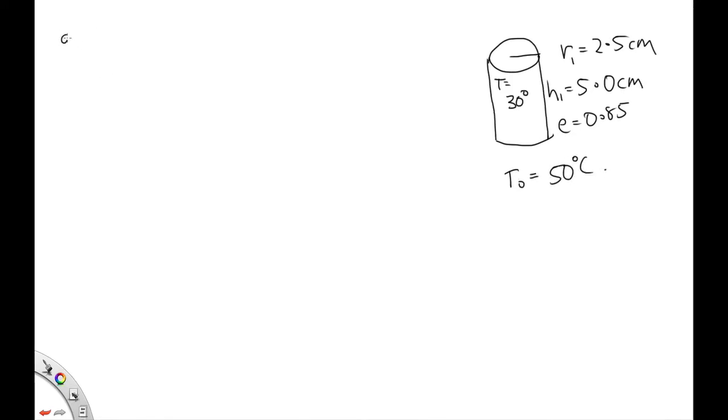OK, so in this question, we had a cylinder. The radius of the cylinder, R1, is equal to 2.5 centimeters. The height of the cylinder, H1, is equal to 5.0 centimeters. The emissivity is equal to 0.85. The temperature of the cylinder is 30 degrees C, and the temperature of the surroundings is equal to 50 degrees C.